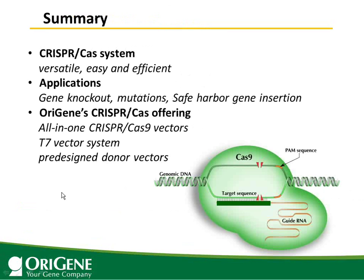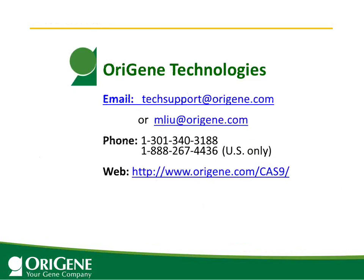In summary, we introduced CRISPR-Cas9 as a versatile, easy, and efficient genome editing system. Applications include gene knockout, specific mutations, and safe harbor gene insertion. OriGene offers all-in-one CRISPR-Cas9 vectors, T7 vector systems, and pre-designed donor vectors. I will now be happy to answer any questions. If there isn't time to answer your question, you can send an email to tech support.